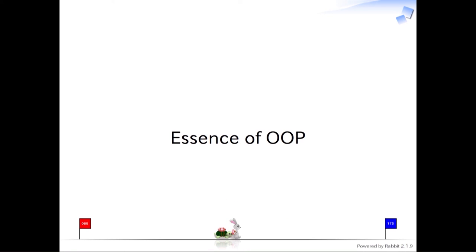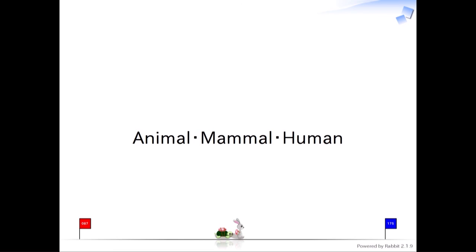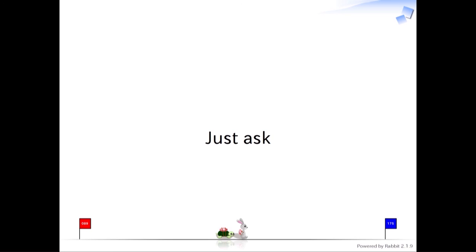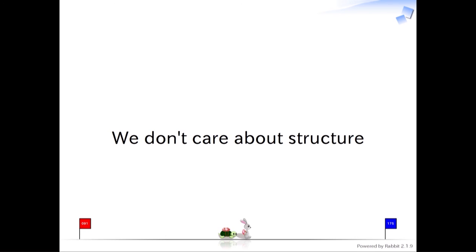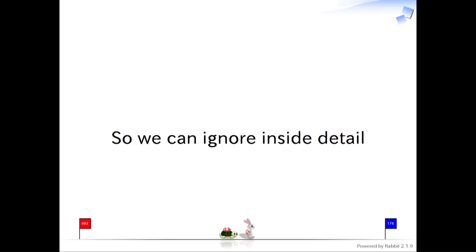Duck typing is essential to object-oriented programming. We do not classify by classes like animal, mammal, human. We do not check types — we just ask: do this, do that. If it is capable of acting as asked, we assume it is a duck. We don't care about the internals or structure, only how it behaves. We can ignore inside details — that is the fundamental concept of OOP.